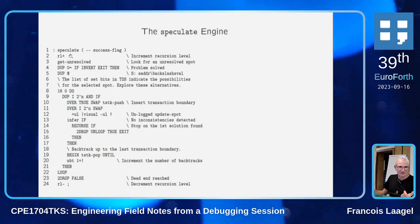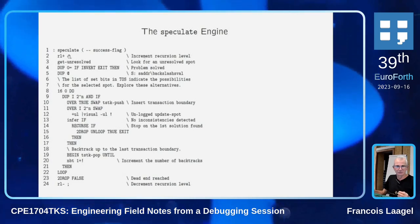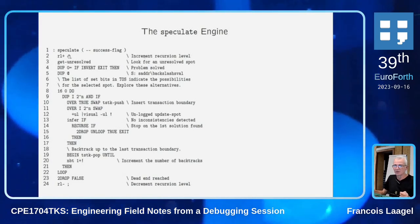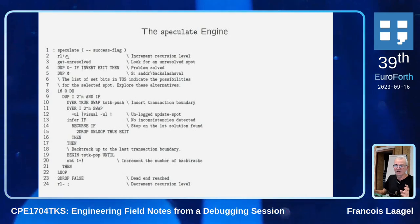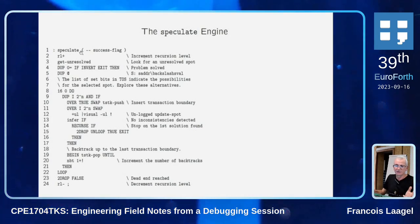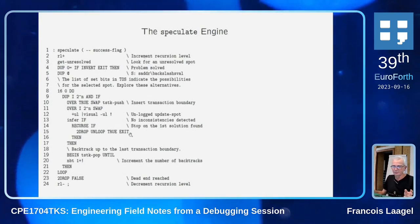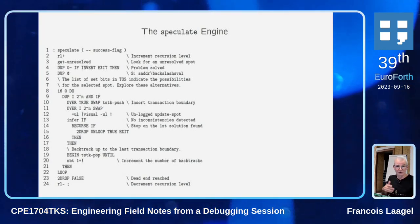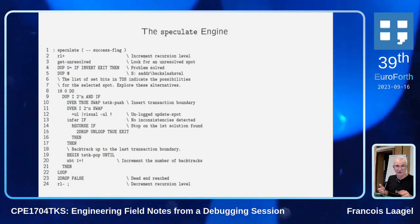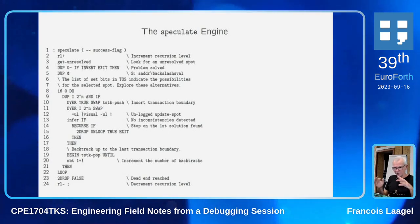We maintain state. A very important state is the recursion level, noted as RL. It's incremented on entry, decremented on exit. We look only for one solution, so we don't have to maintain the recursion level once we found the solution. This algorithm assumes there's only one solution, and we stop at the first one we find.